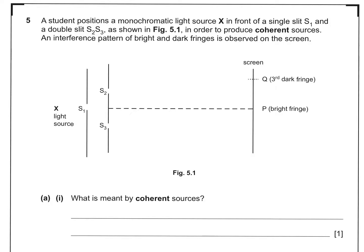Question 5. A student positions a monochromatic light source X in front of a single slit S1 and a double slit S2, S3, as shown in figure 5.1, in order to produce coherent sources.